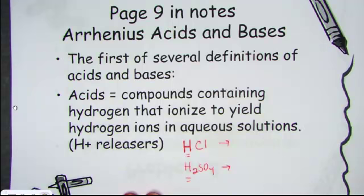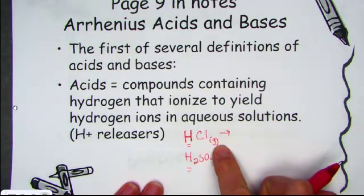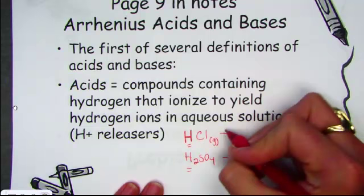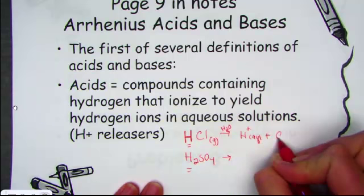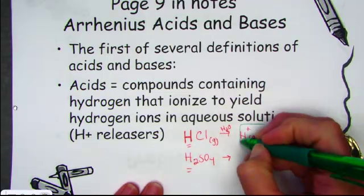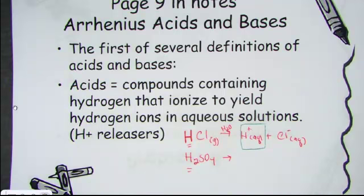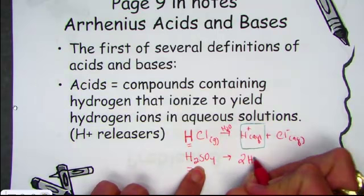HCl, out of water, is actually a gaseous compound. We would name it hydrogen chloride. But when I dissolve it into water, it ionizes to create aqueous ions — hydrogen and chloride. The very definition of Arrhenius acids: any substance that when dissolved in water releases a hydrogen ion, we call it an acid. When sulfuric acid dissociates and breaks apart to form ions, we can see it releasing two hydrogen ions and the polyatomic ion called sulfate.